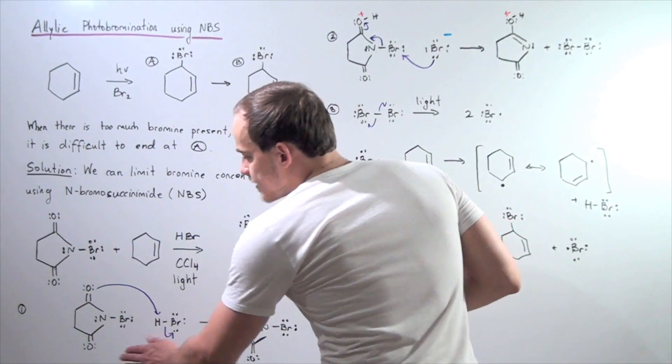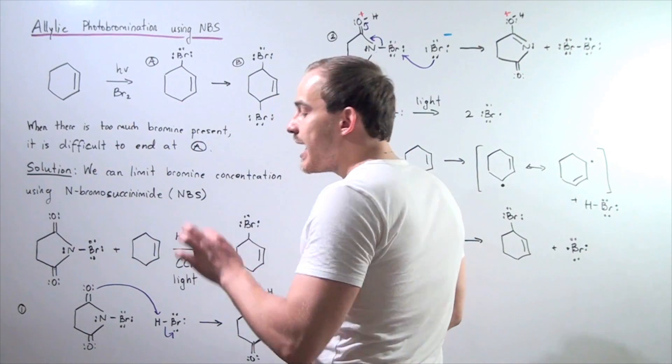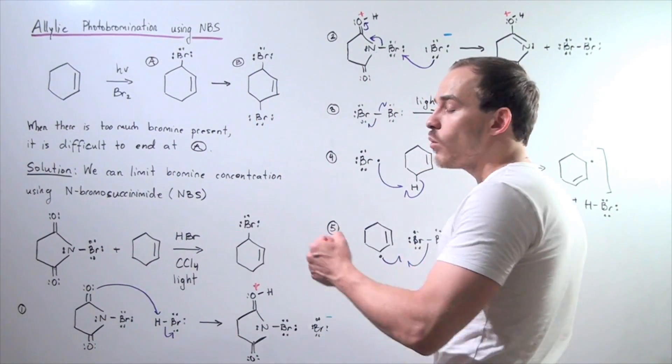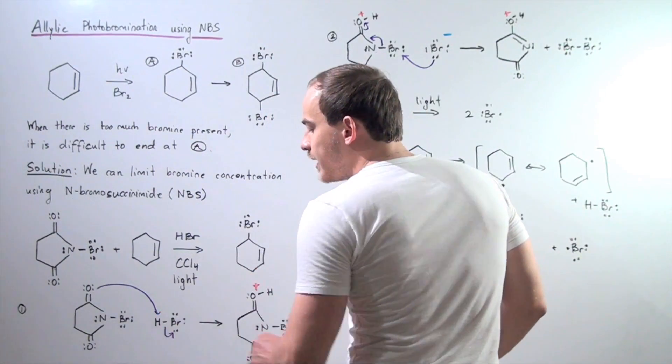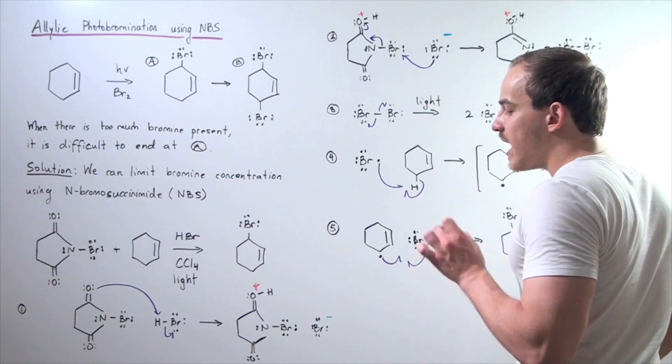So let's begin with our NBS. In the first step, NBS acts as a Lewis base. A lone pair of electrons on either of these oxygens takes away, abstracts this H atom, kicking off this bond, breaking this bond, and the pair of electrons end up on our bromide anion.